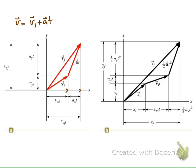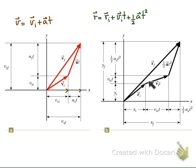Similarly, we can write down the vector equation for the position. We have that r is equal to ri plus vi t plus half of a t squared. When we look at the figure, if this is the initial position of the object, and after time t we have the term vi t — vi is the initial velocity, so vi t is in the direction of the initial velocity.